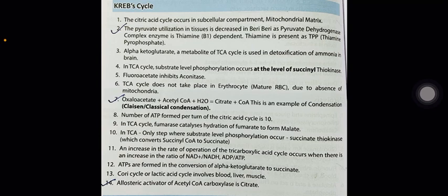An increase in the rate of operation of the tricarboxylic acid cycle occurs when there is an increase in the ratio of NAD⁺/NADH or ADP/ATP. ATPs are formed in the conversion of alpha-ketoglutarate to succinate. The Cori cycle, or lactic acid cycle, involves blood, liver, and muscle. The allosteric activator of acetyl-CoA carboxylase is citrate.